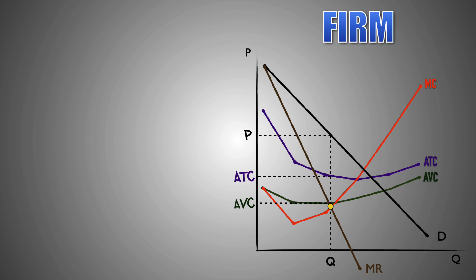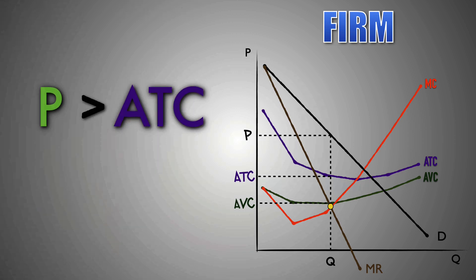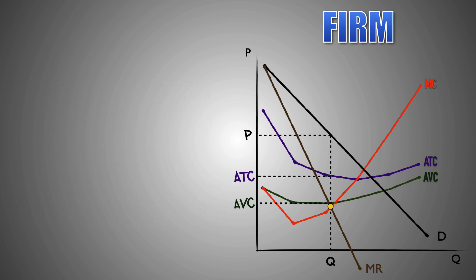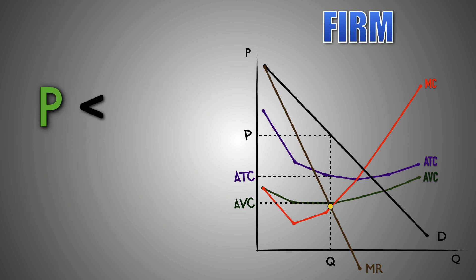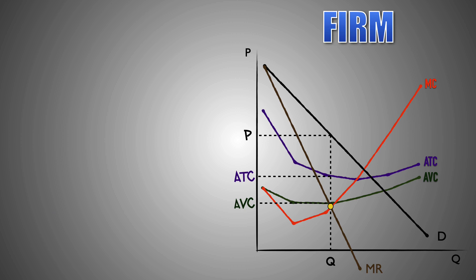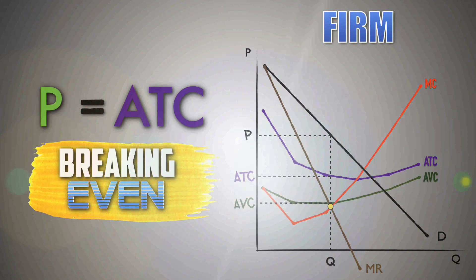Remember, here are the rules. If the firm produces a quantity where the market price is above the ATC curve, then the firm is earning economic profits. If the firm produces a quantity where the market price is below the ATC curve, then the firm is taking economic losses. If the firm produces a quantity where the market price is equal to the ATC curve, then the firm is breaking even.